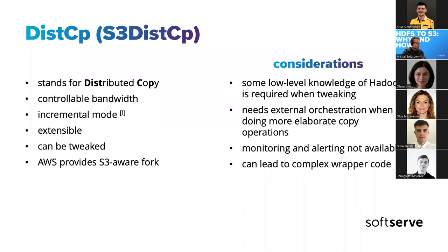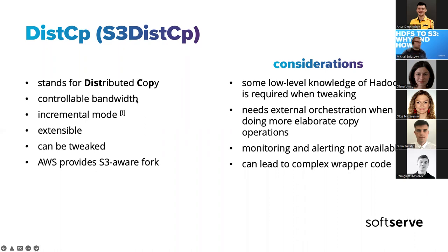As I mentioned, there is also S3DistCp — distributed by AWS itself. S3DistCp contains a couple of additional things. One is that when it copies data it uses multi-part uploads from AWS — a special S3 API that allows parallel part uploads to the cloud with different threads. This is what S3DistCp does — when it has a file to copy, it uses the multi-part upload mode to upload the file. So it's definitely faster — even up to 40% faster than standard DistCp, but only when targeting S3, which we are doing.